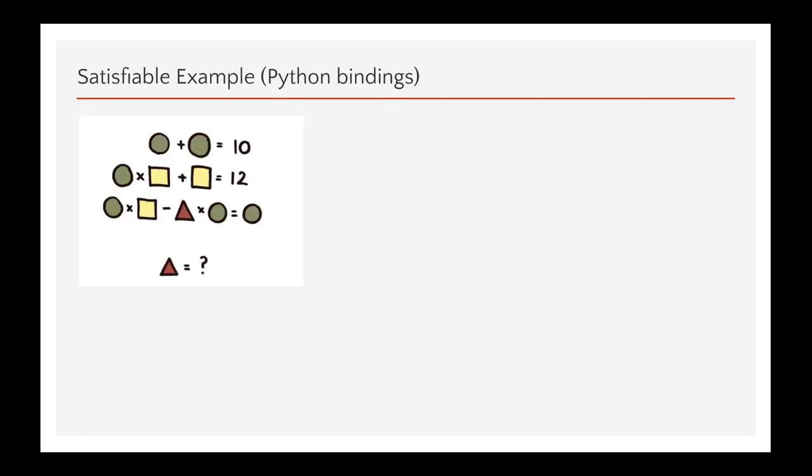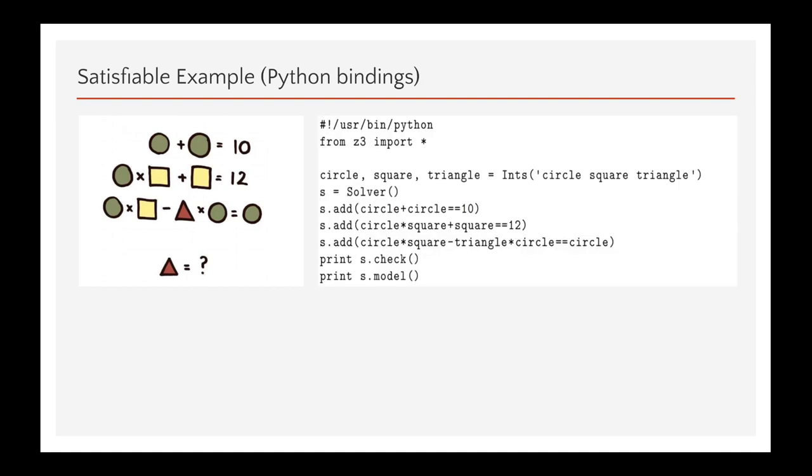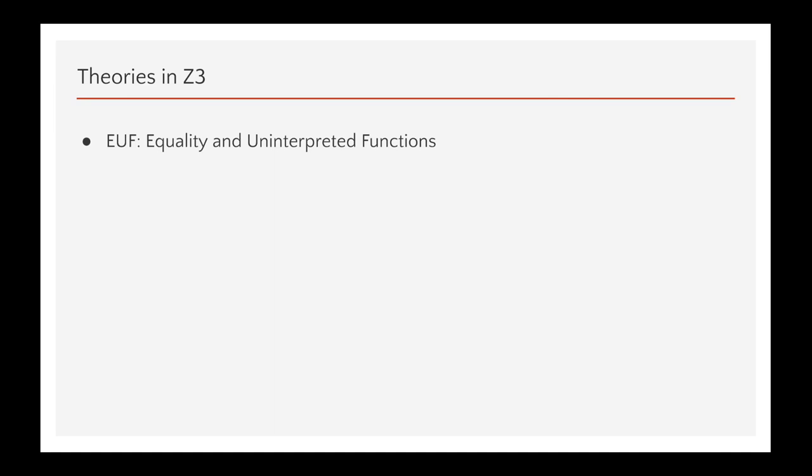This is another example of a system of equations. So, we have two circles that add up to 10 and then we have two more equations using square and triangle and we need to find the value of the triangle. It is pretty easy to solve this using Z3. This is an example of Z3 using python bindings. So, here we are declaring three integers and creating a solver object. And then we add the constraints and we check if the model is satisfiable. So, if we run this, we'll get sat and also the values of the variables.